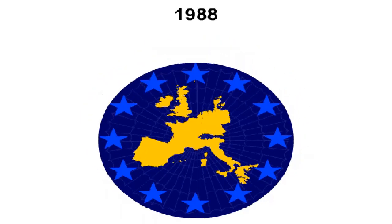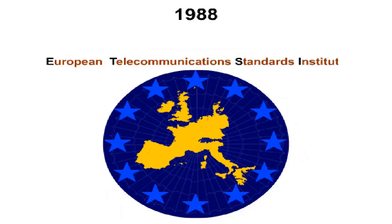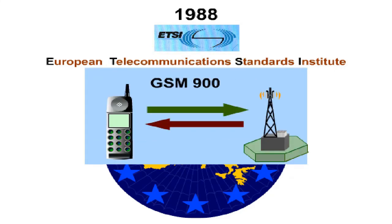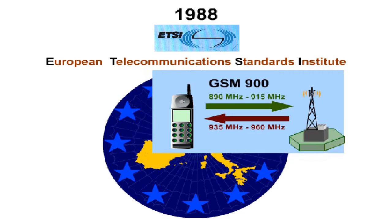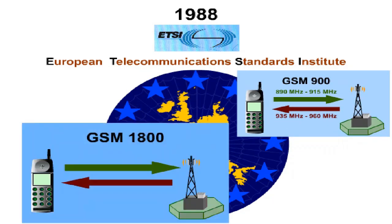In 1988, the European Telecommunications Standards Institute, ETSI, was founded. Its task was to work out the GSM standard for a digital radio telephone network. In the GSM 900 standard, the frequency range between 890 and 915 MHz was assigned to the uplink, and the range between 935 and 960 MHz to the downlink. In GSM 1800, the frequency ranges 1710 to 1785 MHz were added in the uplink, and 1805 to 1880 MHz in the downlink.